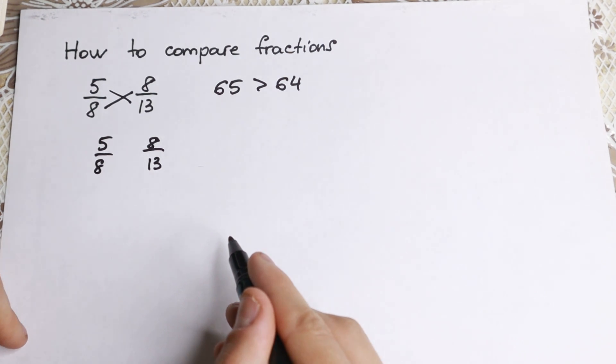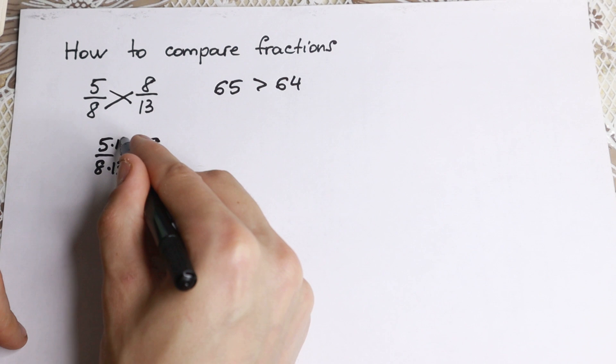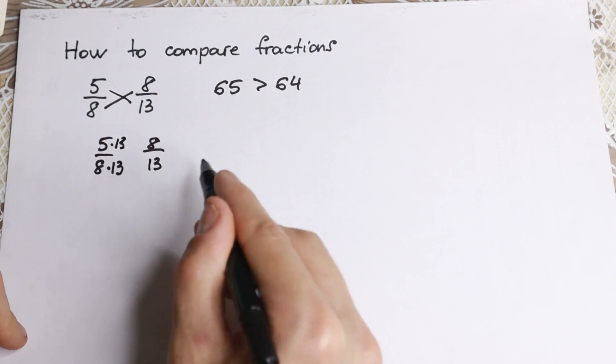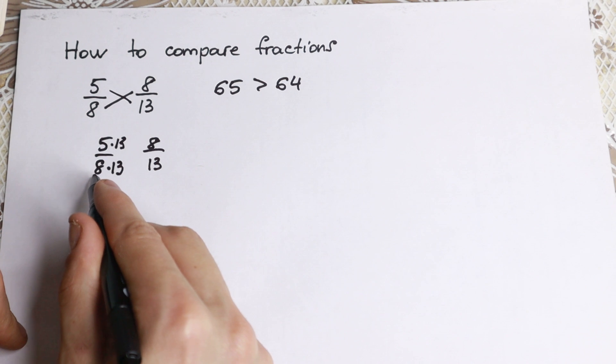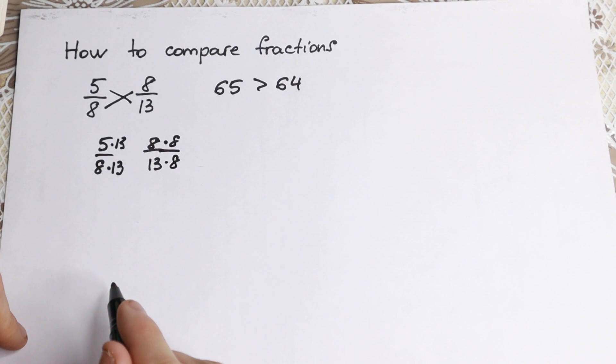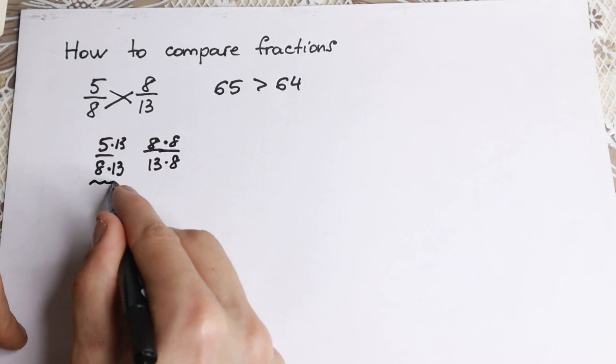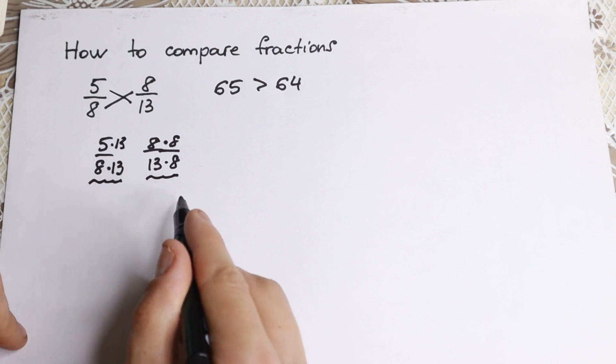Why is this method correct? Take a look closely. We're just multiplying both sides by 13 - by this denominator and this denominator - and the numerator we multiply by this denominator. We have 8 times 8, and take a look closely, this denominator is the same because we have 8 times 13 and 13 times 8.